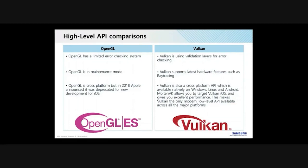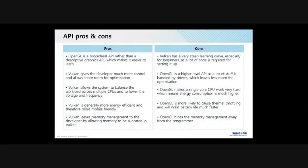OpenGL is now in maintenance mode, meaning new features will be sparse and come much later than Vulkan. Vulkan is still actively updated, with new hardware features like ray tracing and mesh shaders being added regularly. Additionally, Vulkan is truly one API for all platforms — including iOS and macOS through MoltenVK — meaning you only ever have to write and maintain one render path.